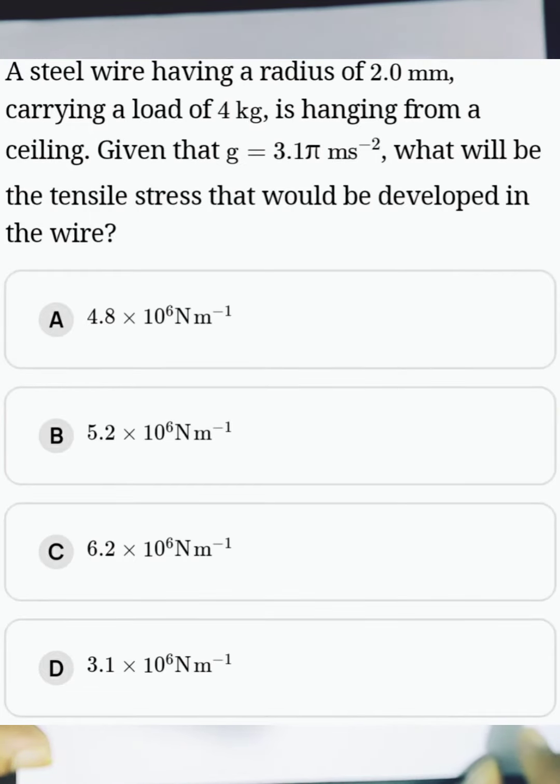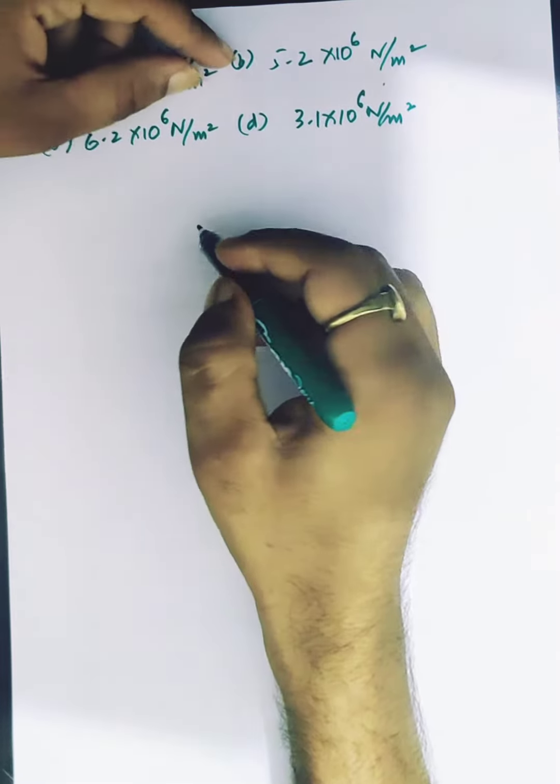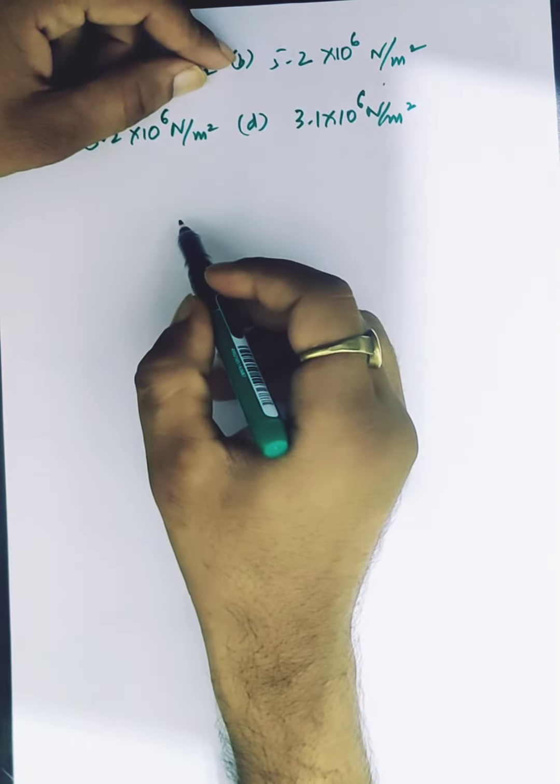A steel wire having a radius of 2 mm, carrying a load of 4 kg, is hanging from a ceiling. Given that g equals 3.1π m/s², what will be the tensile stress developed in the wire? So in the question we are given a steel wire of radius 2 mm carrying a load.